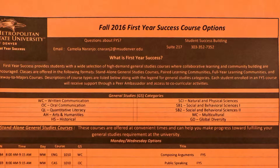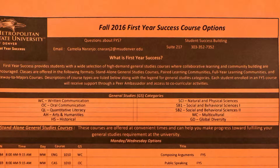At the top of the sheet, there is a legend that reads General Studies Categories. This will tell you which general studies category each first-year success course fulfills.